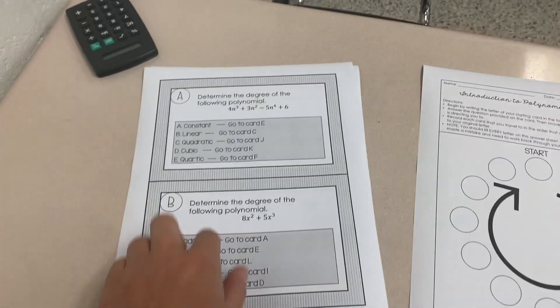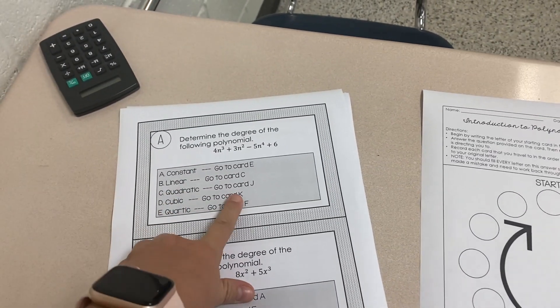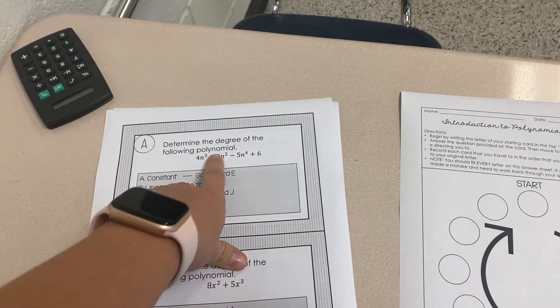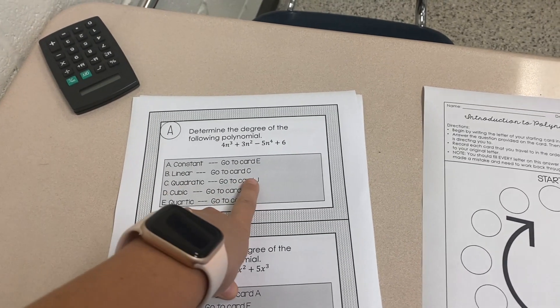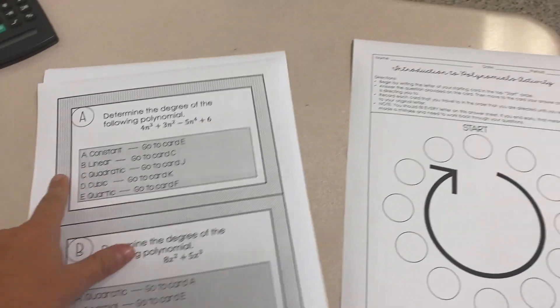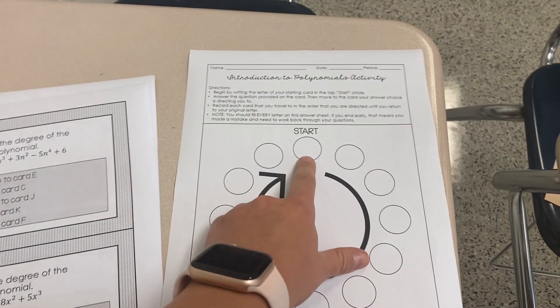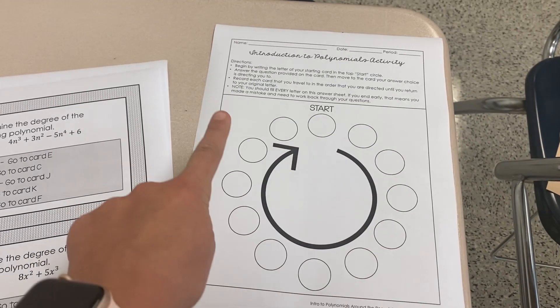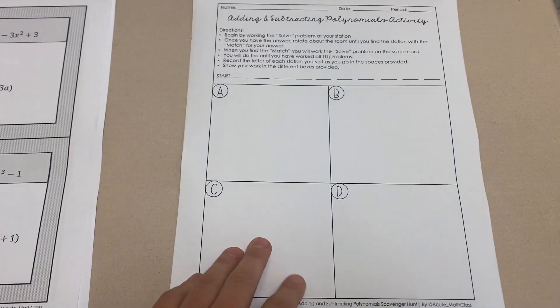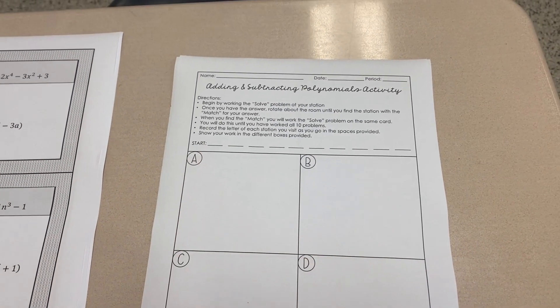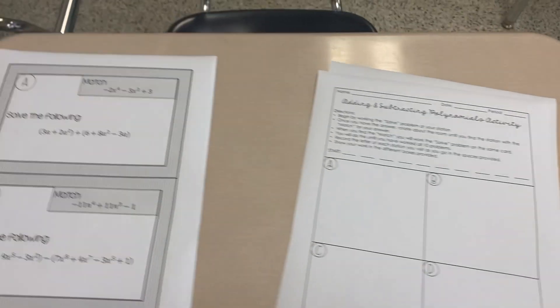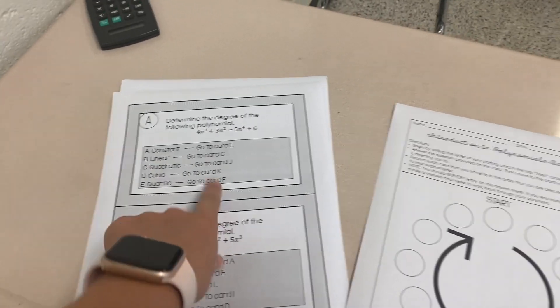These are the two around the rooms I like to do — I have templates for both. One allows for multiple choice: it gives options and tells you which card to go to. For example, the question is 'determine the degree,' they look for the largest exponent, decide it's quartic, write C, and it tells them to go to card J. I post the cards everywhere and put some outside in the hall for a different group to give them space. If problems don't require work, they just put their start letter and follow the sequence around. But if problems do require work, there's a template where they write the start letter and do the work for each card in a specific spot.